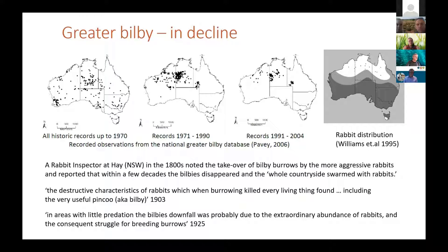There is record of Bilby population decline as the extraordinary abundance of rabbits occurred. This was attributed to the consequent struggle for breeding burrows, and was also most likely the result of loss of food sources as vegetation was decimated.